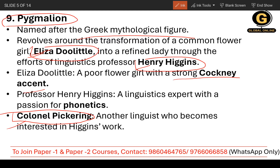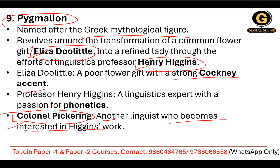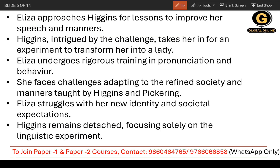Colonel Pickering, another linguist — I told you the less important character — becomes interested in Higgins' work, and they were always together. Now Eliza approaches Higgins for lessons so that she can improve herself and refine herself into a very good, classy lady. Higgins was very much intrigued by the challenge and takes her in for an experiment to transform her into a lady. So Eliza undergoes rigorous training in pronunciation and behavior.